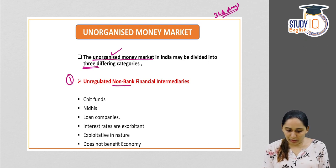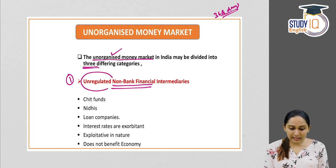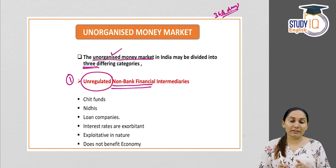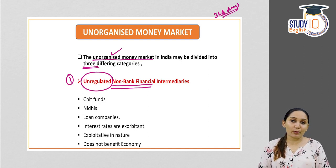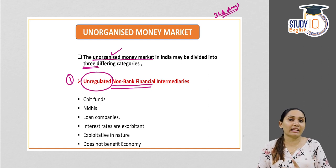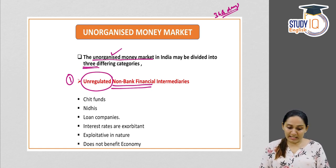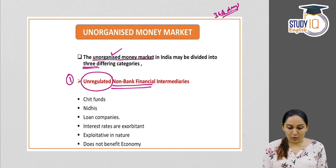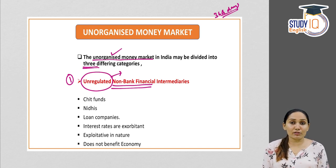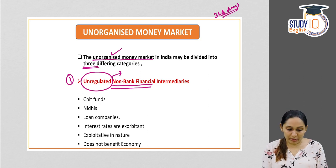The first category is unregulated non-banking financial intermediaries. The major difference between organized and unorganized money market is that organized money market is regulated by regulators like SEBI and RBI, whereas unorganized money market is not regulated by any regulator.